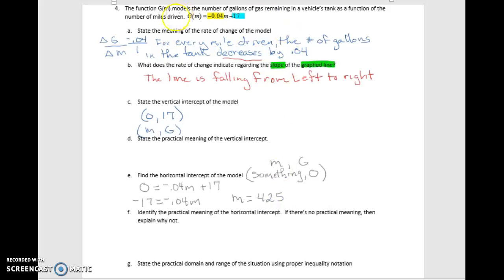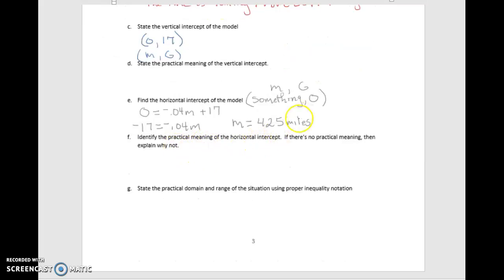And since M relates to miles, this would be 425 miles. And so now the practical meaning, now we want to look at the practical meaning of the horizontal intercept, and again, the 425 represents the miles. The 0 represents gallons. So after driving 425 miles, there will be 0 gallons remaining in the tank.